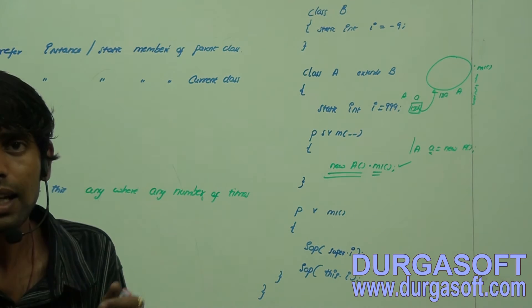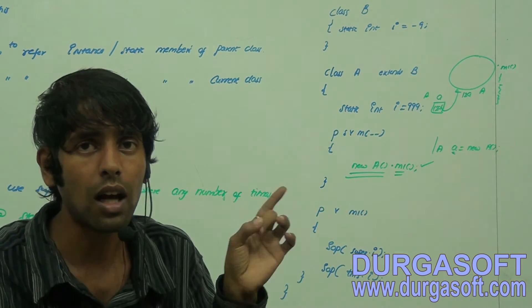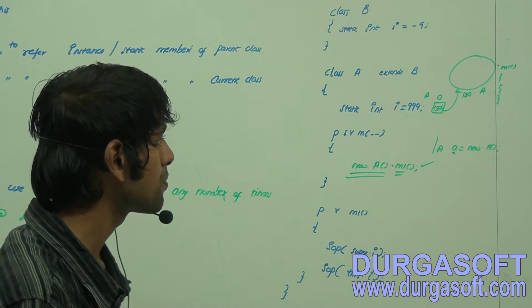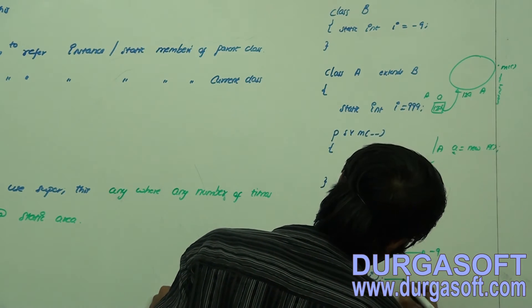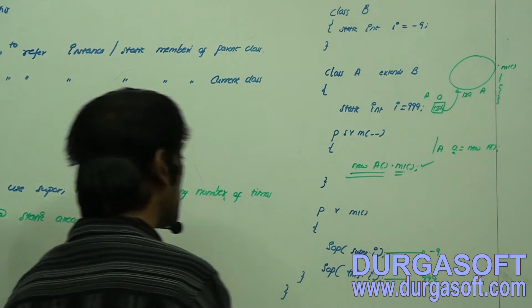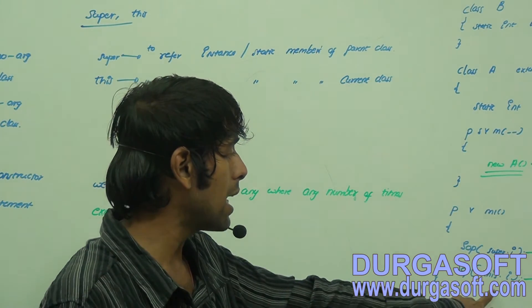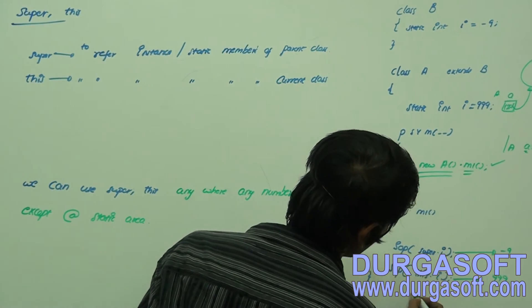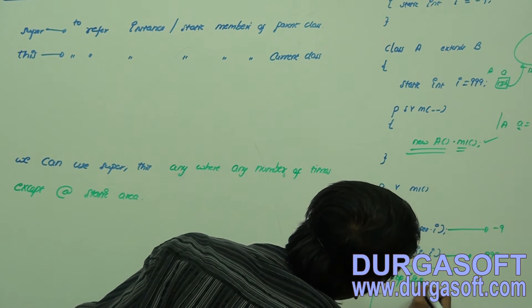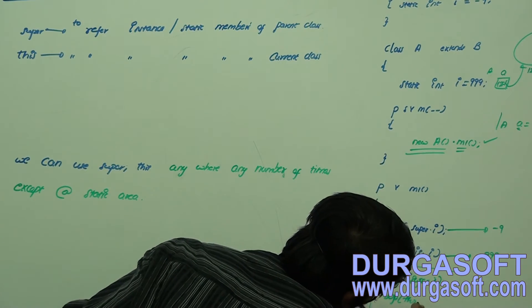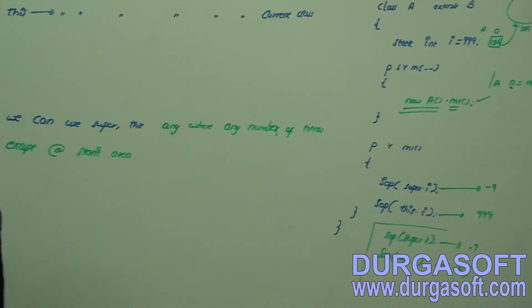Now what will be the answer? super.i is -9, and this.i is 999 — that's the answer. By using super and this you can refer to static members. I've used super and this only within the instance area. You can call super.i and this.i any number of times — no restrictions. So the output will be -9 and 999 again.